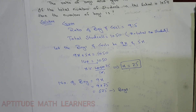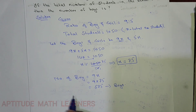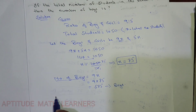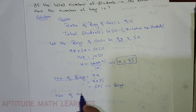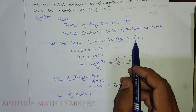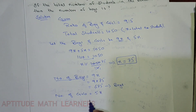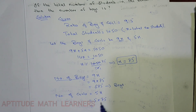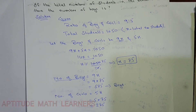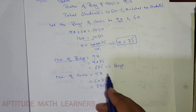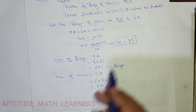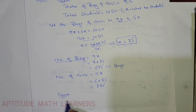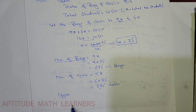To check that our answer is correct, we also find the number of girls. Number of girls equals 5x, which is 5 multiplied by 75, giving us 375. To verify: 375 plus 675 should equal the total of 1050.